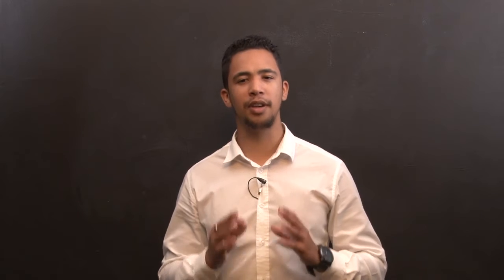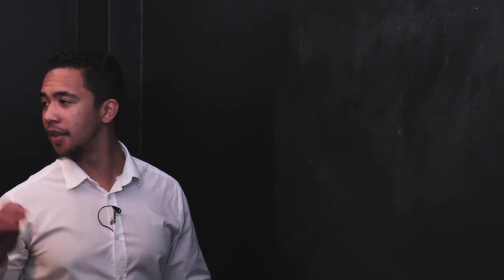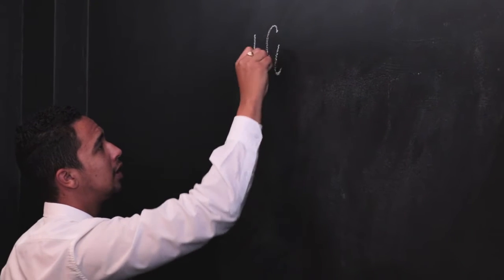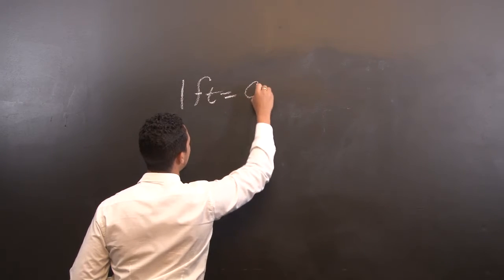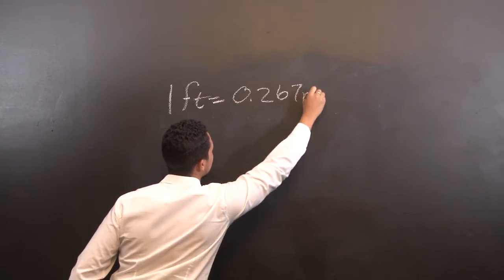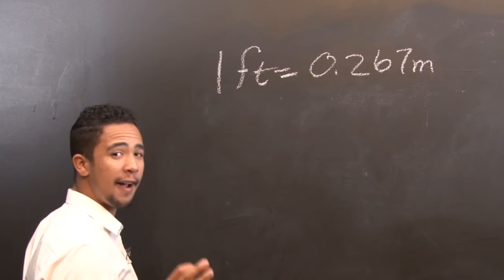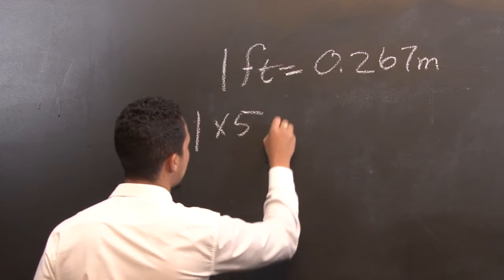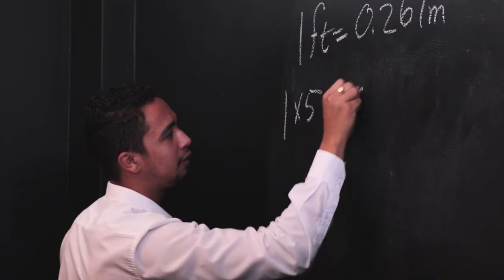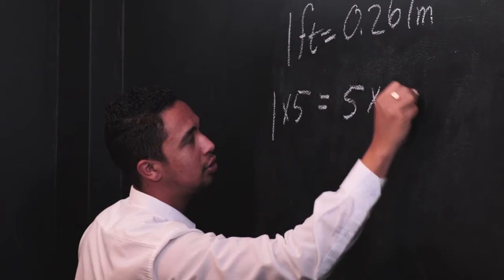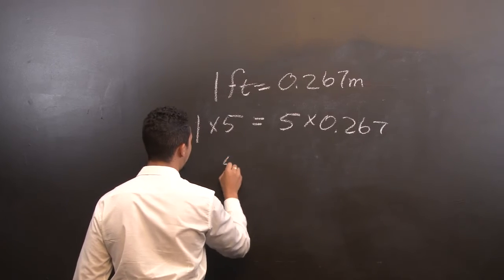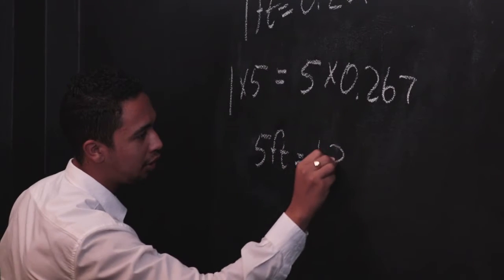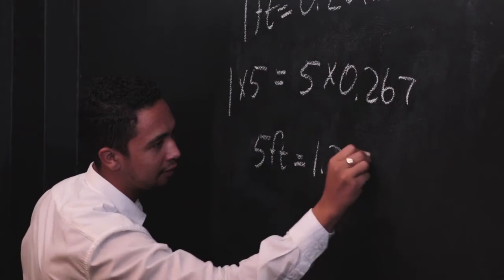Let's look at how to convert 5 feet to meters. The conversion factor is 1 foot is equal to 0.267 meters. So we are converting 5 feet to meters. 1 times 5 on this side is equal to 5 times 0.267. Therefore, 5 feet is equal to 1.335 meters.